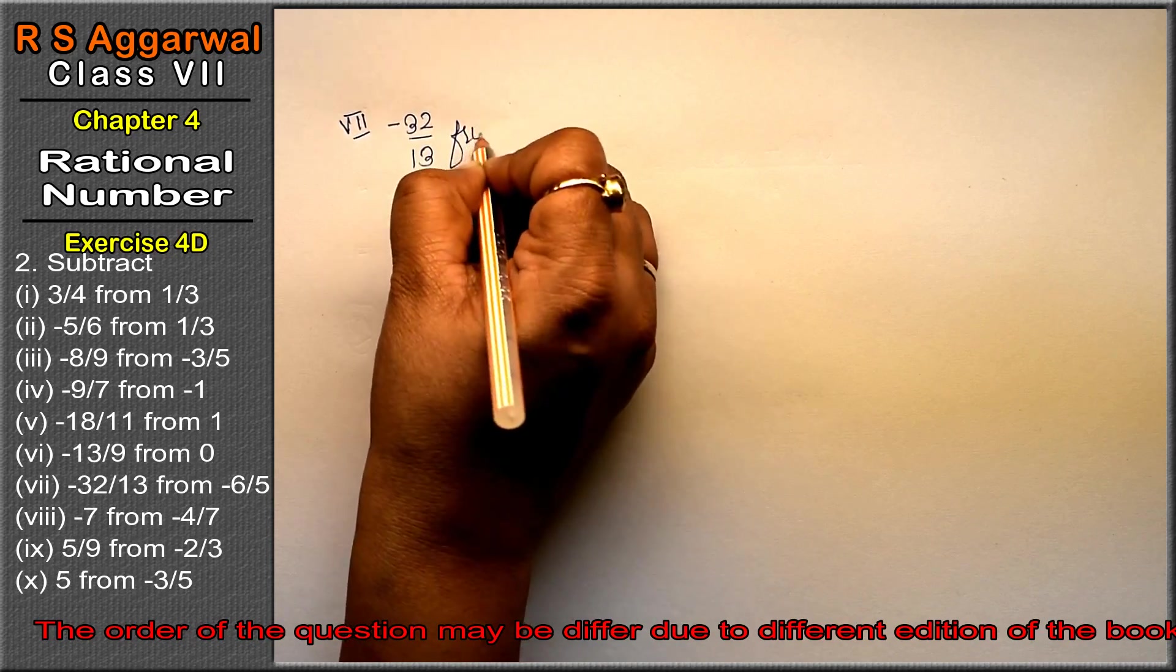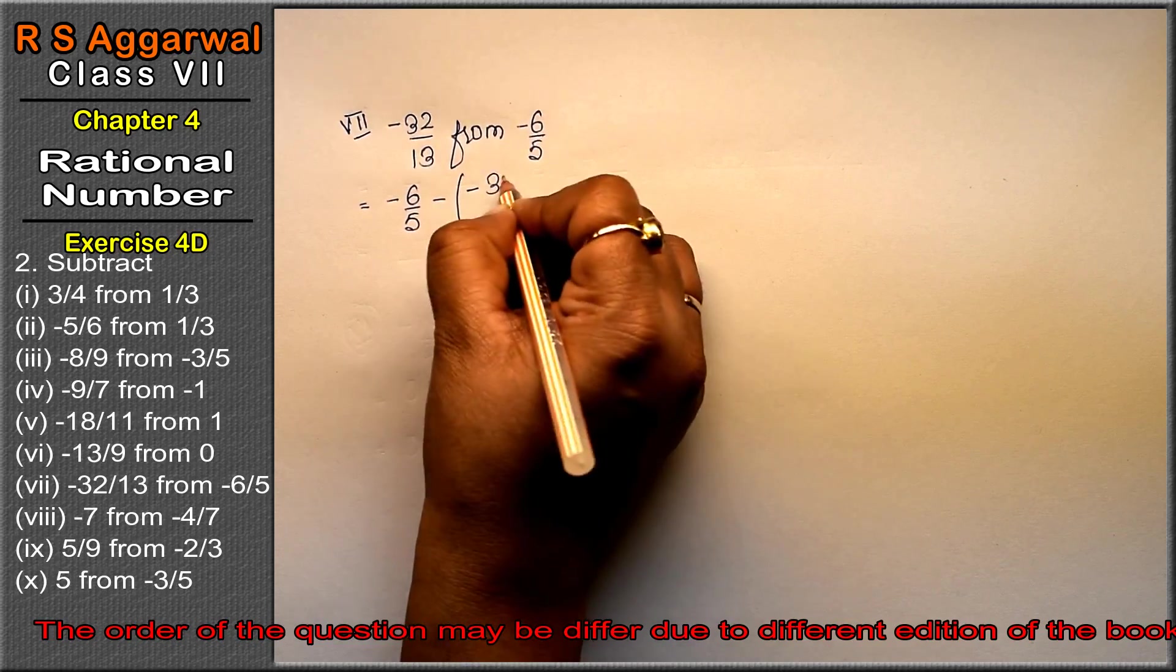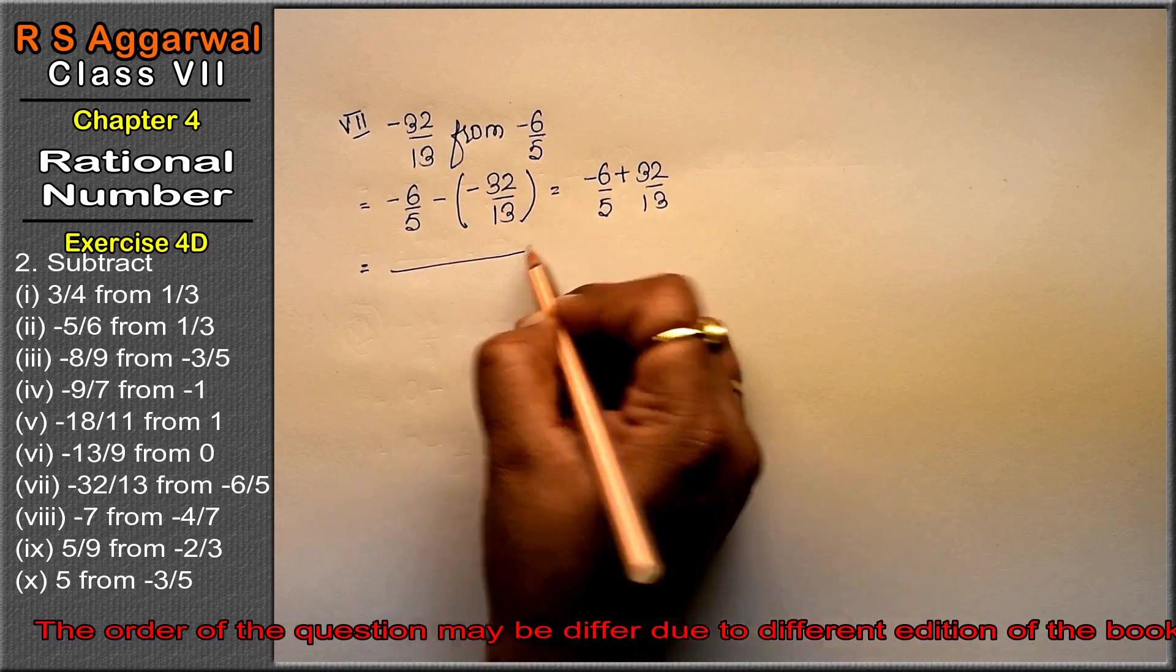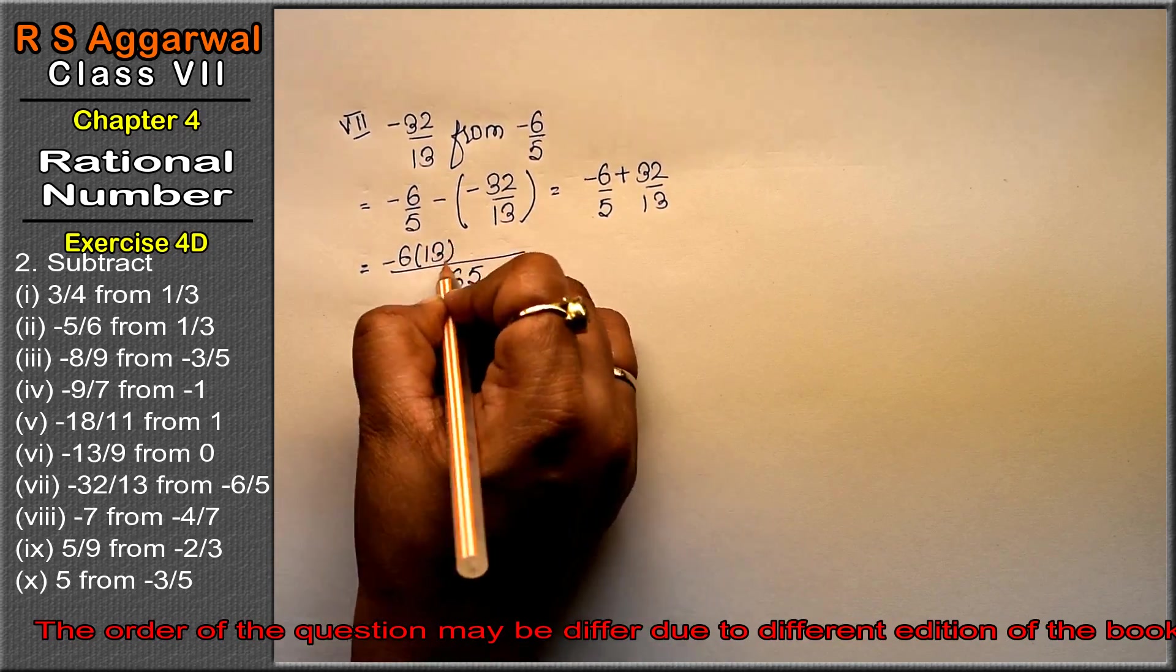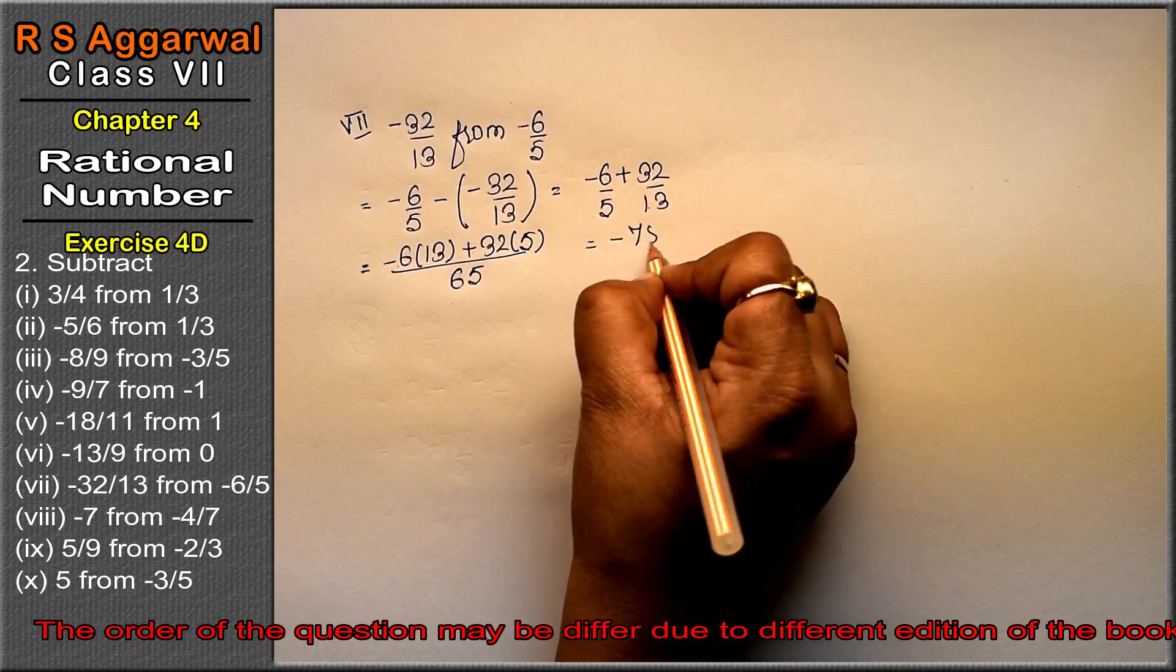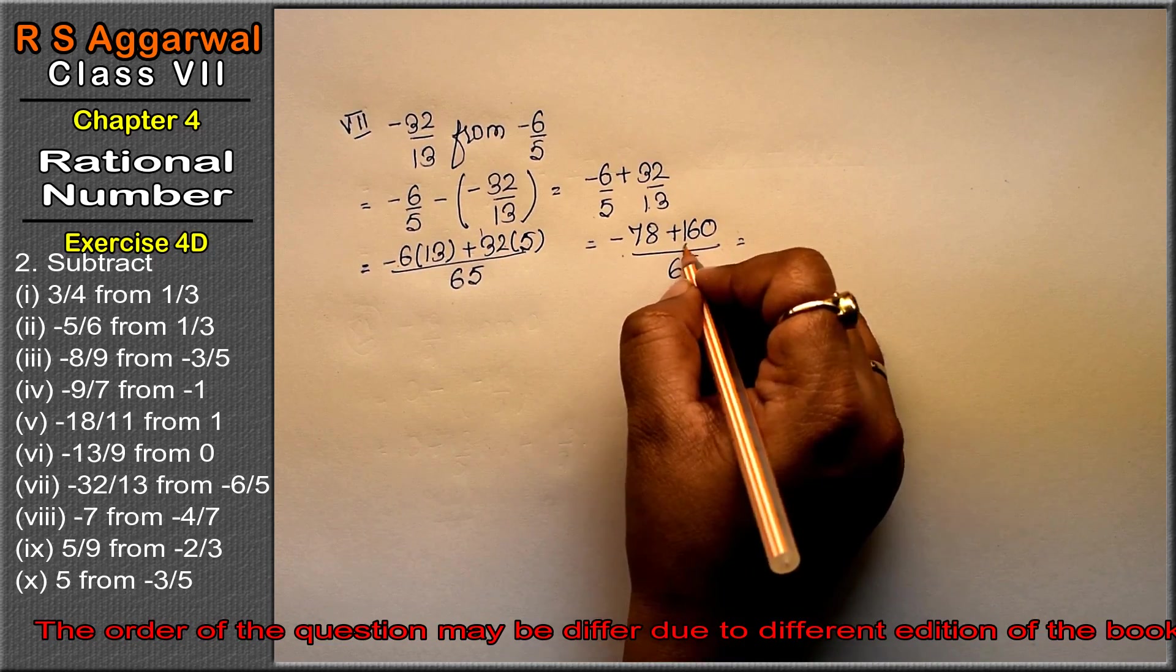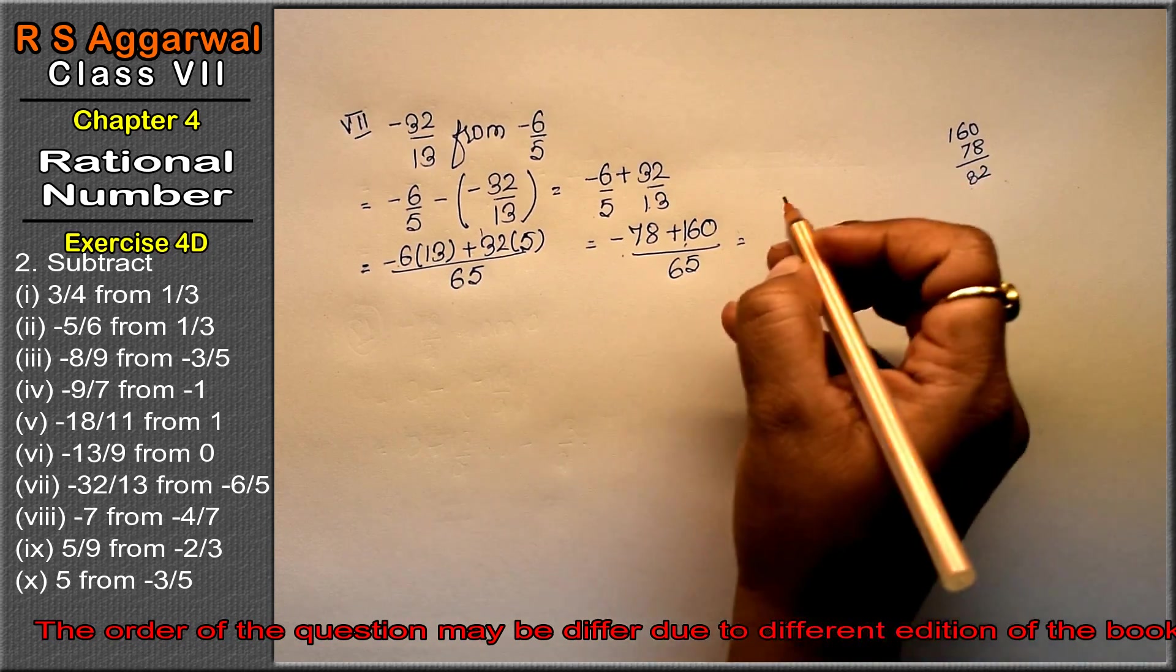Seventh part: subtract minus 32 upon 13 from minus 6 upon 5. So minus 6 upon 5 minus minus 32 upon 13. Opening bracket: minus 6 upon 5 plus 32 upon 13. LCM: 13 times 5 is 65. Minus 6 times 13 is minus 78, plus 32 times 5 is 160, upon 65. Both opposite signs, subtract: 160 minus 78 is 82. Sign of bigger one is plus, so 82 upon 65 is the answer.